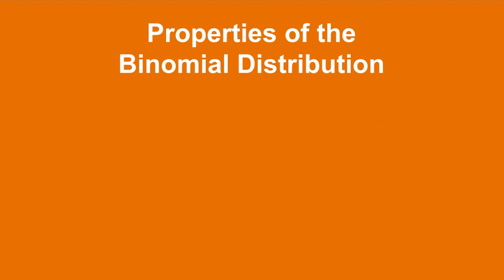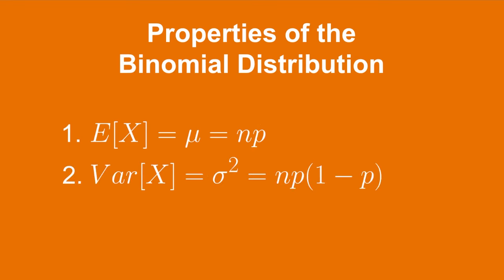Finally, let's take a moment to discuss a few properties of the binomial distribution. First, the expected value of a binomial random variable, or the mean number of successes over an experiment of n trials, is equal to the number of trials times the probability of success in any one trial. Second, the variance of a binomial random variable is equal to the number of trials times the probability of success times the probability of failure. To get the standard deviation, we can just take the square root of this variance.